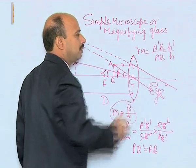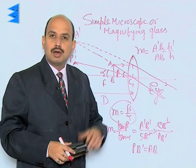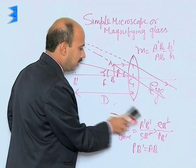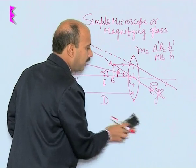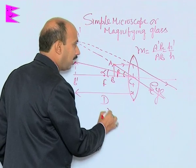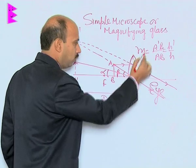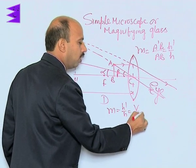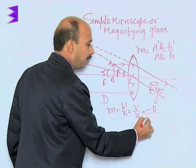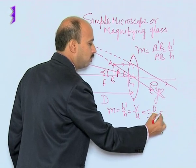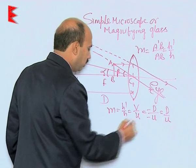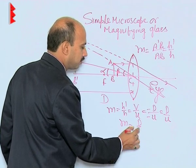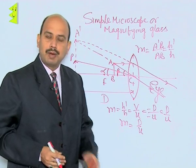Now we can solve it further. Using sign convention, h-dash upon h is equal to v upon u. V is minus D upon minus u, that is D upon u. So we can write m = D upon u. This is the magnifying power.